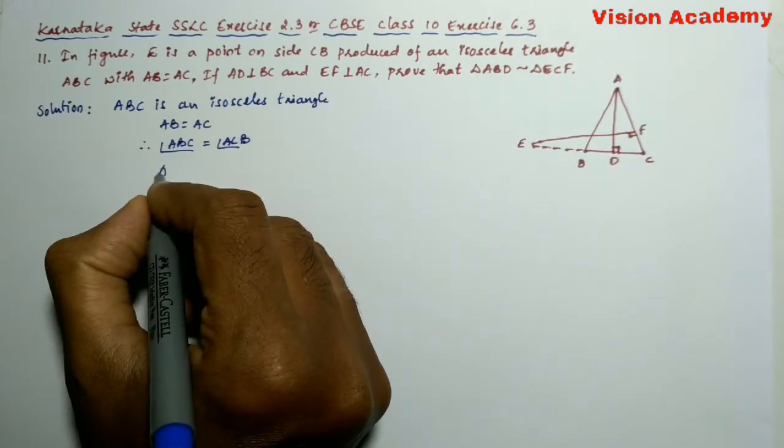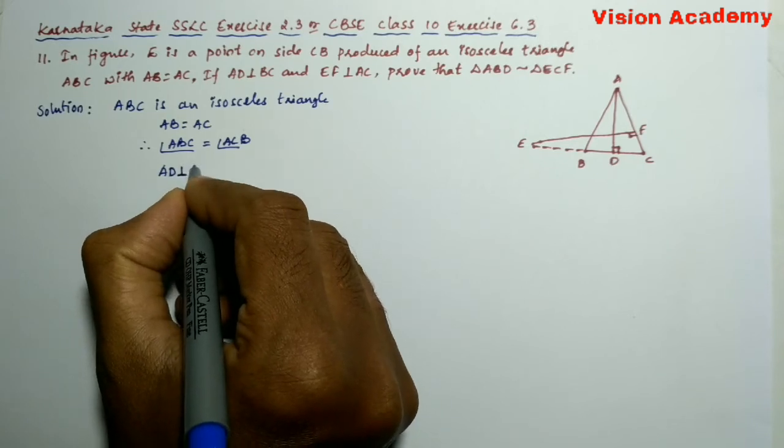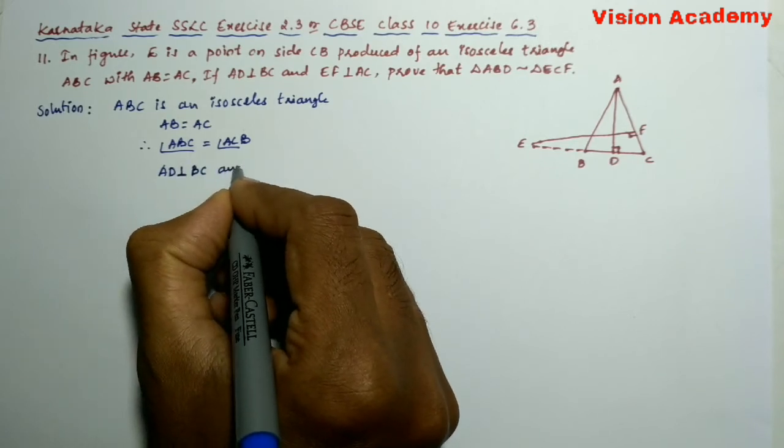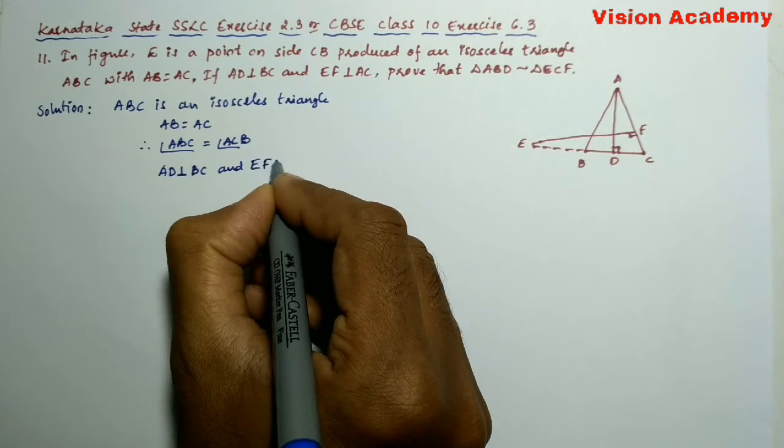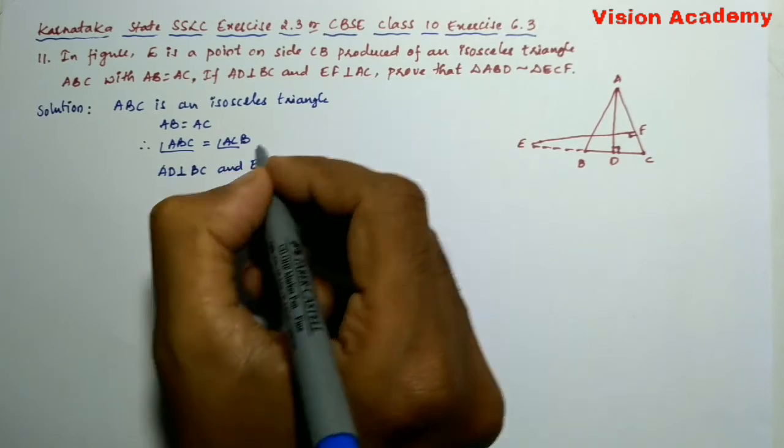Given AD is perpendicular to BC and EF is perpendicular to AC in the question.